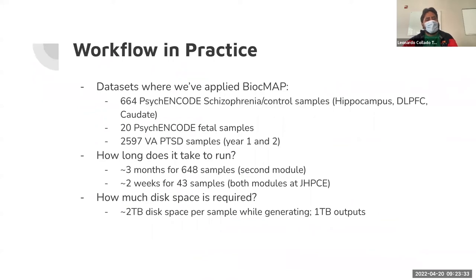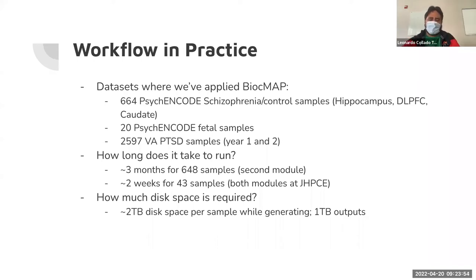We've applied BiasMap to over 3,000 samples across three projects. If you multiply 3,000 by two terabytes per sample, that's over 6,000 terabytes — or six petabytes — of disk space, which is a lot. We end up having to delete some output files. If you've ever wondered why some disk is getting full, it's potentially because of WGBS data.